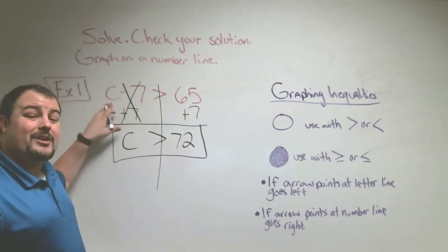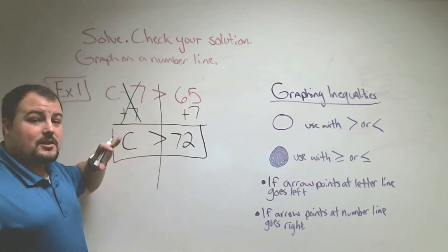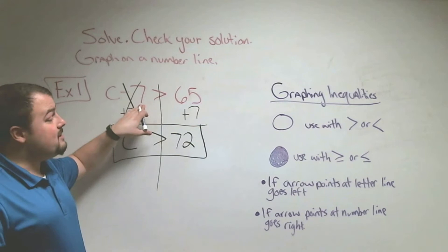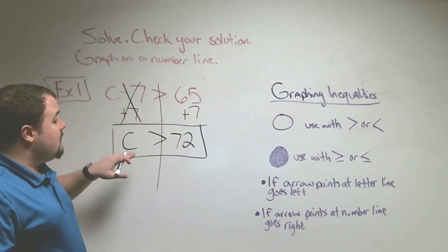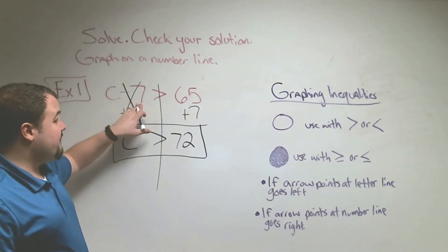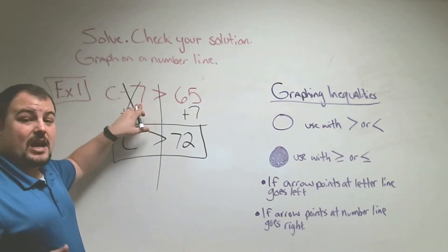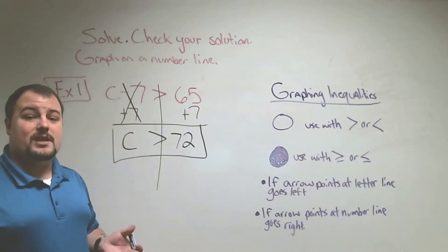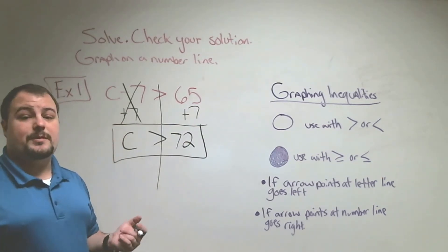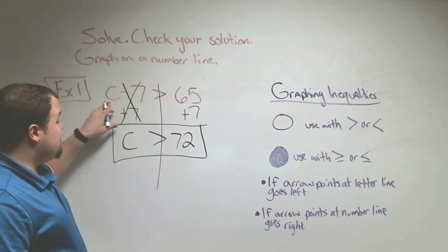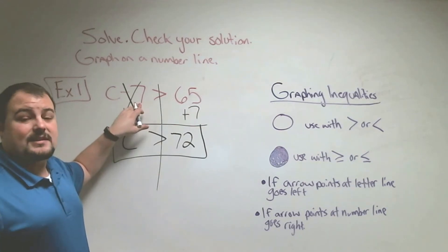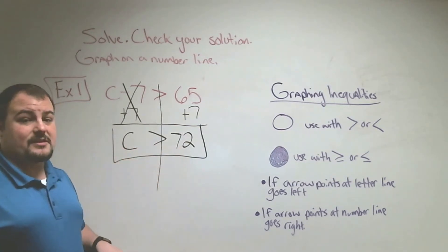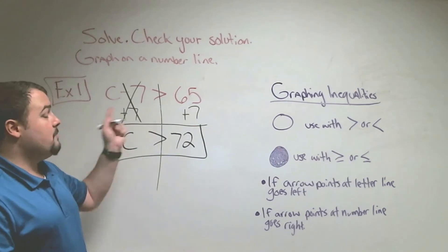What that means is as long as we put a number bigger than 72 in, it's going to be bigger than 65. If we put 77 — since 77 is bigger than 72 — then 77 minus 7 is 70, and 70 is bigger than 65. But if we put 72, then 72 minus 7 is 65, and 65 is not bigger than 65, it's equal. So we need numbers bigger than 72; we cannot be equal to 72.